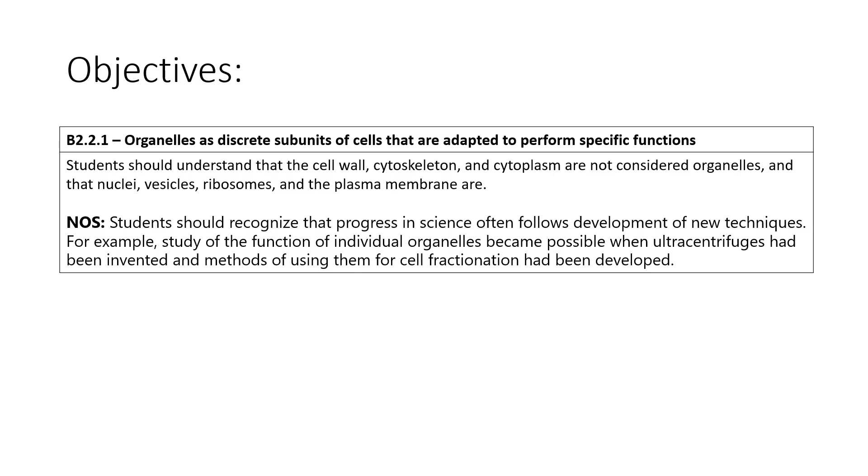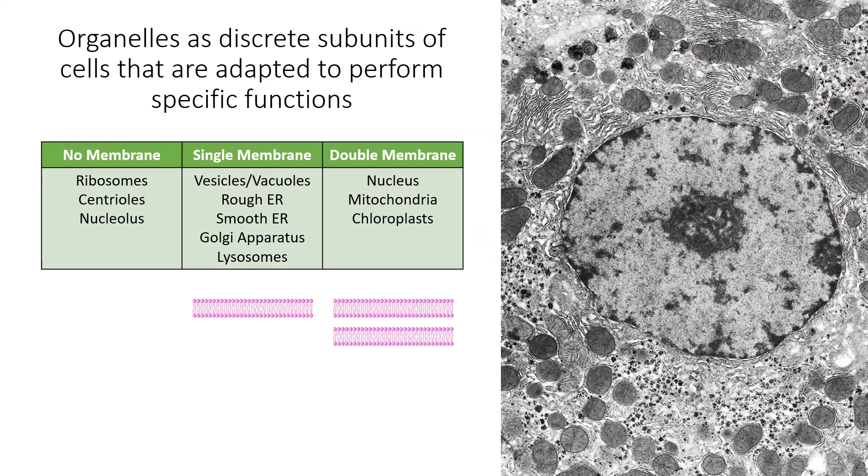Hey guys, Mr. P here. In this video we're going to talk about understanding B221, specifically organelles as discrete subunits of cells that are adapted to perform specific functions. We're going to talk about the content statement that students should understand: that the cell wall, cytoplasm, and cytoskeleton are not considered organelles, and that nuclei, vesicles, ribosomes, and the plasma membrane are.